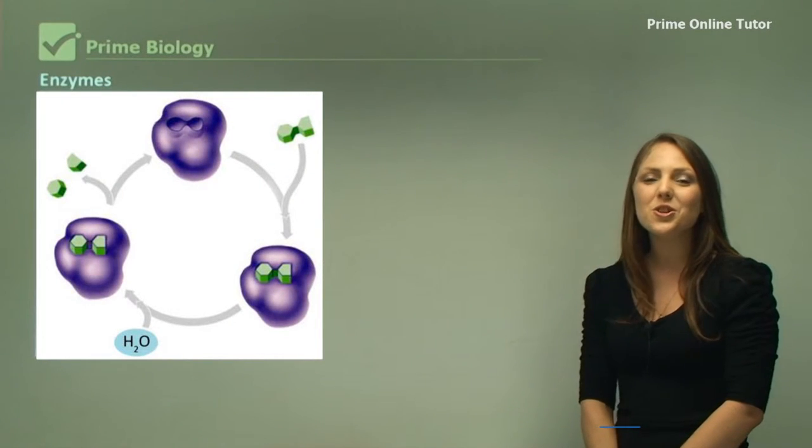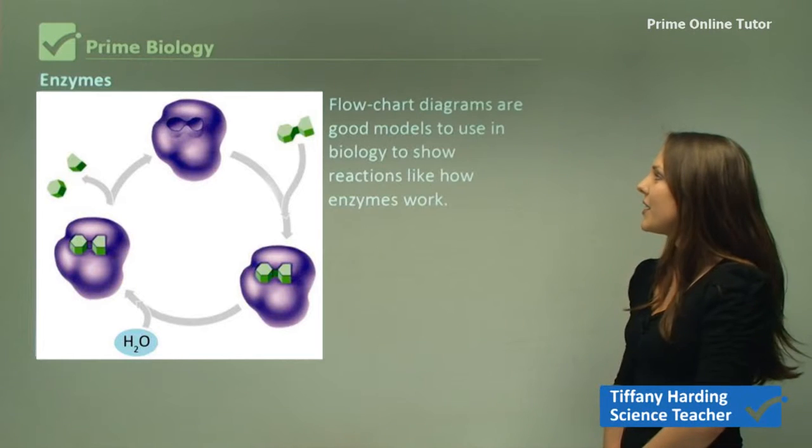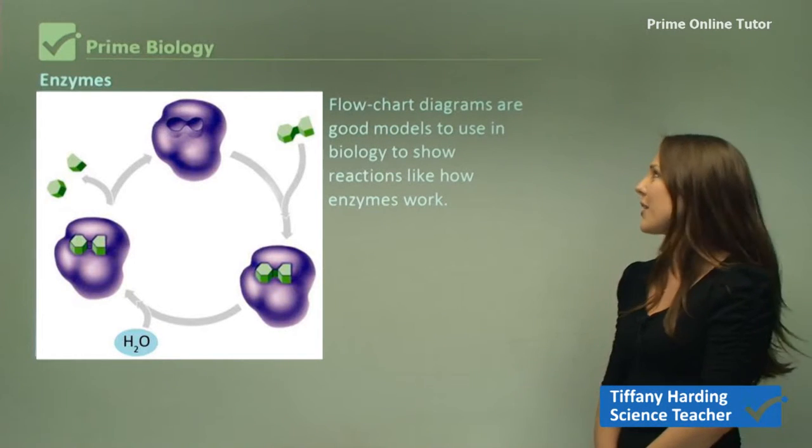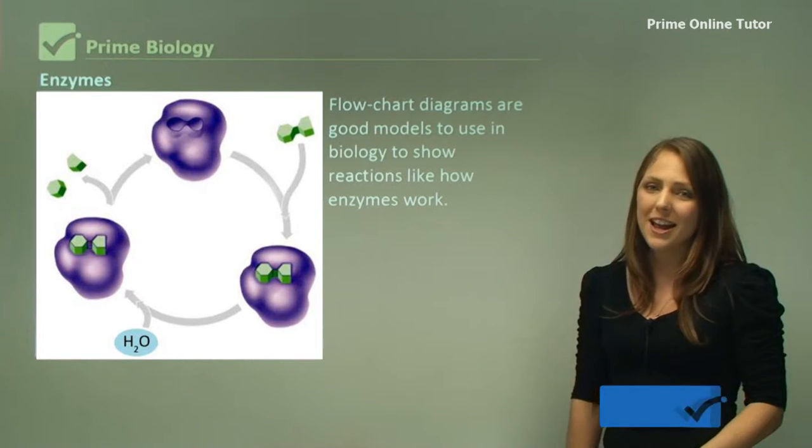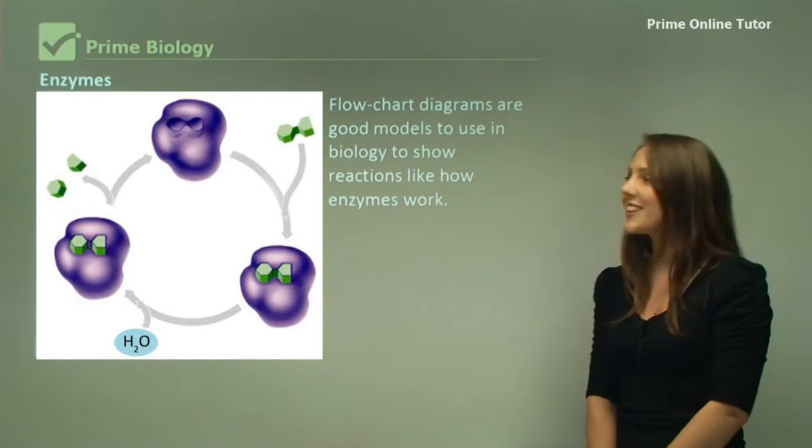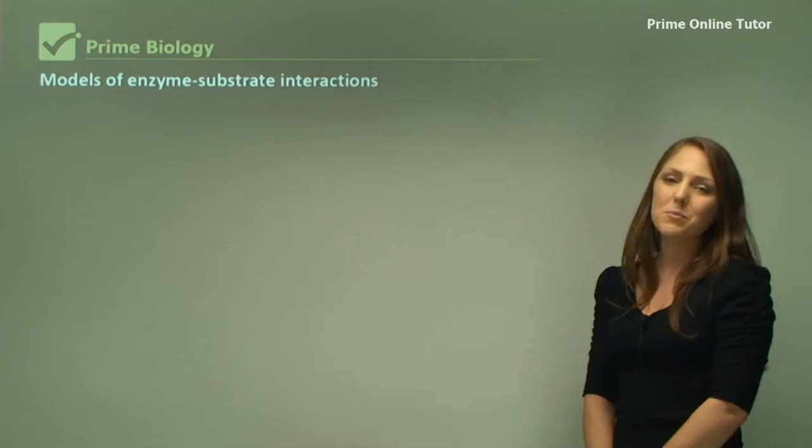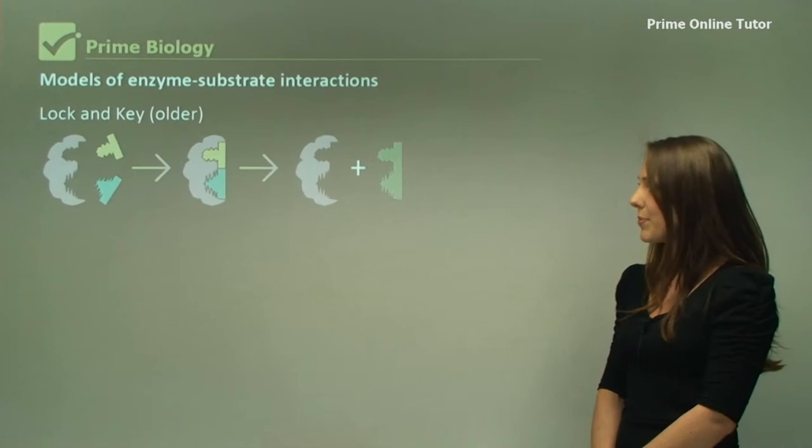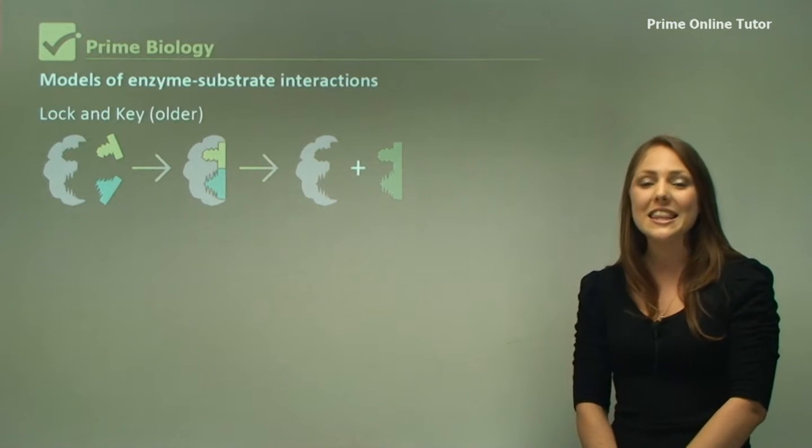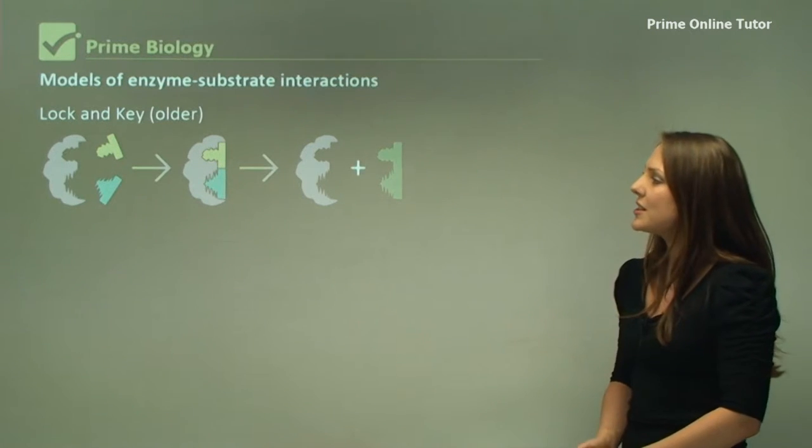With enzymes you need to know the two different models. Flow chart diagrams are really good models in biology to use and show reactions like how enzymes work. Models of enzyme substrate interactions - there's two models that you need to know for biology. There's the lock and key, now that's an older model.